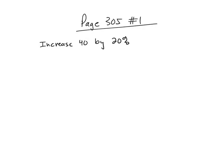Okay, here's a problem on page 305. It's problem number 1. You're supposed to increase 40 by 20%. What that means is you're supposed to take 40 and add to that 20% of 40.